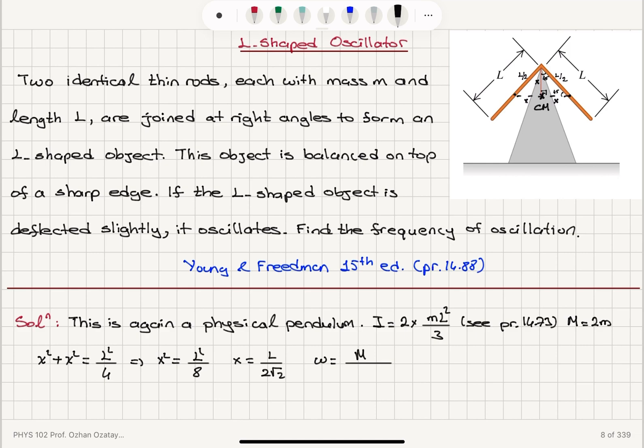So total mass M, gravitational acceleration G, distance between the center of mass and the pivot point D, divided by the moment of inertia I, square root. So if I substitute for the total mass M, 2m...